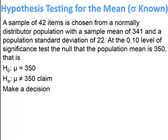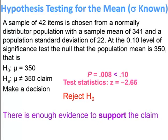Pause and try. The p-value was less than alpha, giving a test statistic of −2.65. We rejected the null hypothesis. The claim is on the alternative, so because we reject the null, the claim is most likely true — there is enough evidence to support the claim.